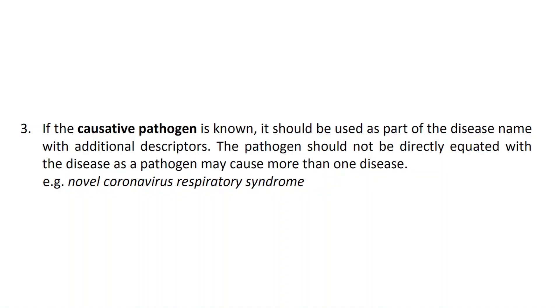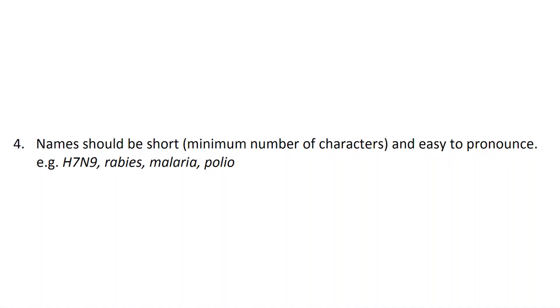Number three: if the causative pathogen is known, it should be used as part of the disease name with additional descriptors. The pathogen should not be directly equated with the disease, as a pathogen may cause more than one type of disease — for example, novel coronavirus respiratory syndrome. Remember, this was written in 2015, well before SARS-CoV-2 was discovered. Number four: names should be short, minimum number of characters, and easy to pronounce — for example, H7N9, rabies, malaria, polio. That one's pretty much self-explanatory.